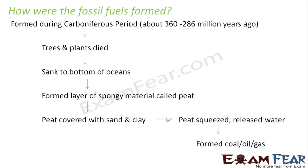As a result, the peat got squeezed and released water. After releasing water, the squeezed peat gradually formed coal, oil, or natural gas. This process was not simple or quick — it took several hundreds and thousands of years to form coal, oil, or natural gas. This is basically how fossil fuels are formed, and that is why they are known as fossil fuels.